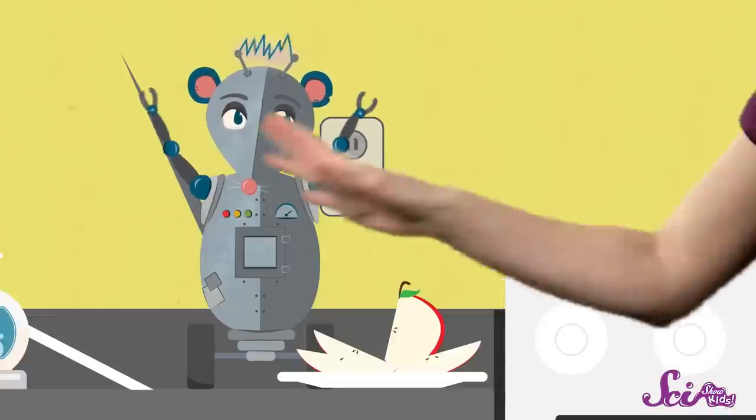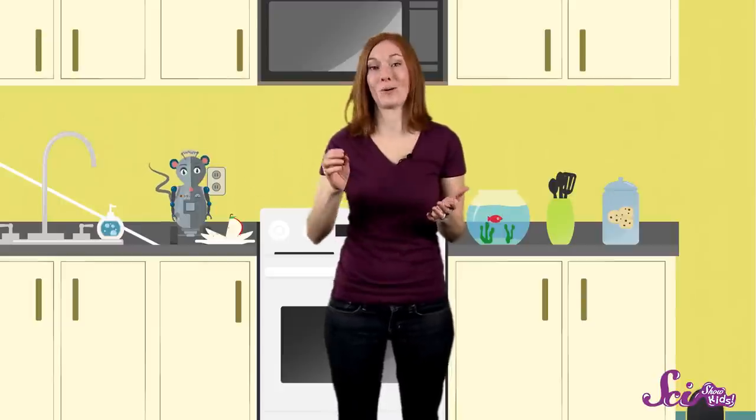But when the snake bites its prey, let's say, like, a rat... Oh, no, no, no, not you, Squeaks! Not a mechanical one. A real one. When it bites into a real rat, these teeth act like needles. Toxic venom then travels from the snake's mouth, through the hollow fangs, and directly into the prey.